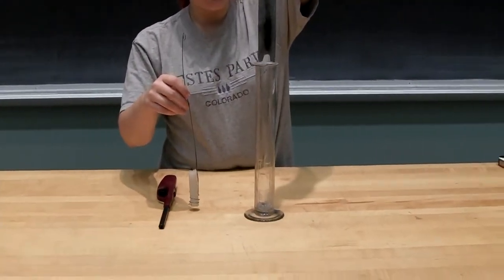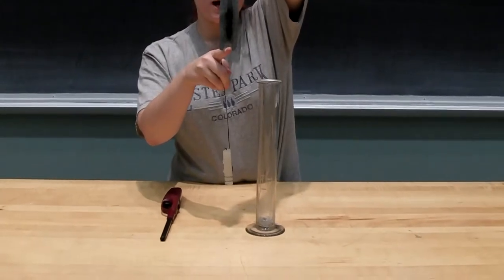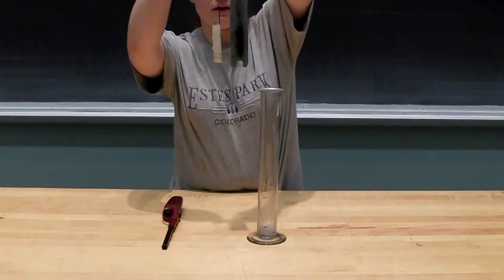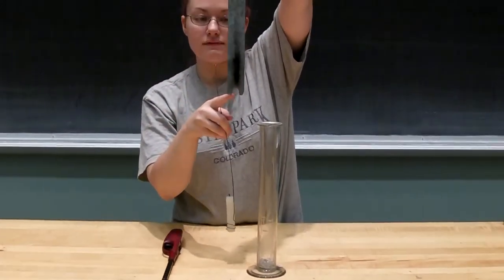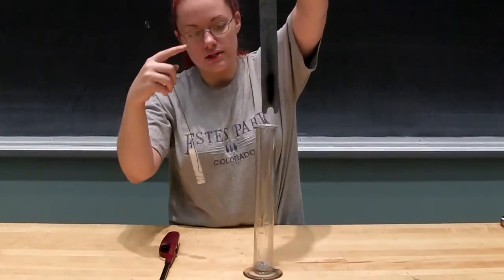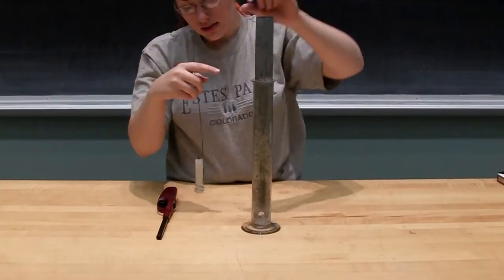So if I go ahead and put our chimney piece in here, you'll notice that there is a notch here. This will allow the air to come in one side, have somewhere to go, and come out the other side when it's in this cylinder.